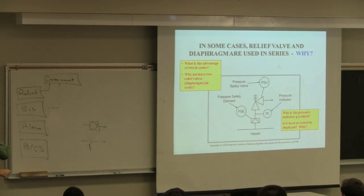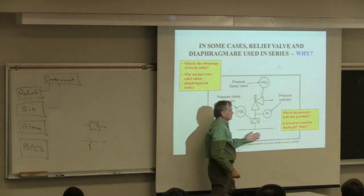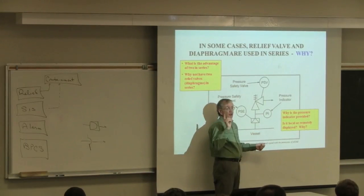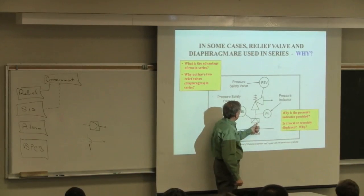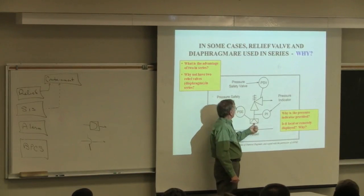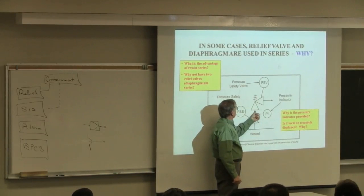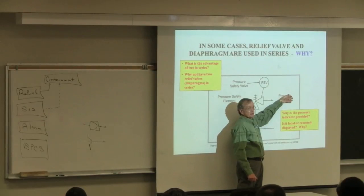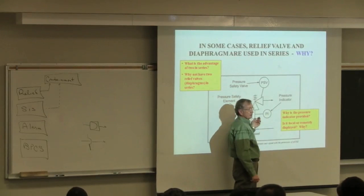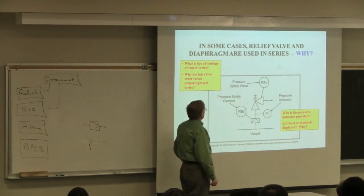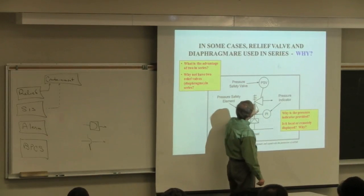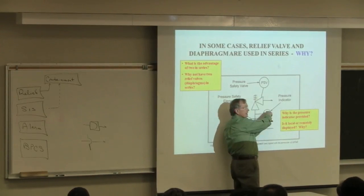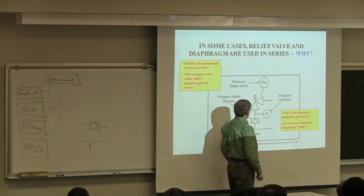Here's an important design: a vessel with a burst diaphragm, followed in series by a safety valve, then a release to a container, with a pressure sensor between the burst diaphragm and the safety valve. This looks strange—two devices in series. The vessel is a reactor making a polymer by emulsion polymerization. Why would you use this design?